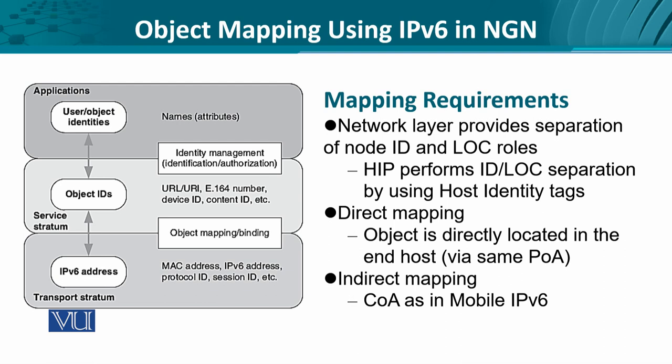The mapping requirements directly come out of the relationship between the objects, their identifiers, and the identities, which are translated into more well-known addresses at the transport stratum. In the application layer, each user and object has to have some identity. These identities need to be given IDs, and these IDs have to be translated into addresses. The relationship could also be seen as names getting translated into URLs, getting translated into MAC addresses, IPv6 addresses, session IDs, etc.